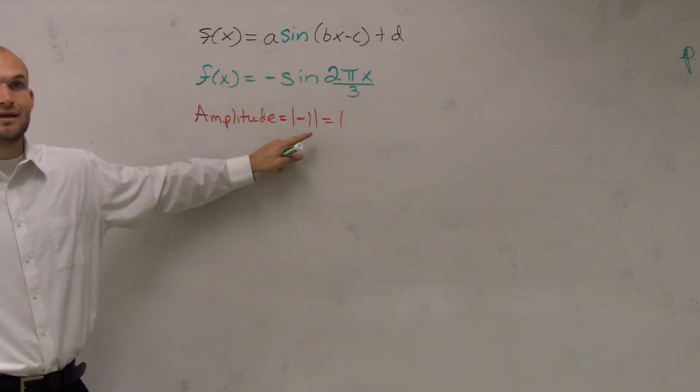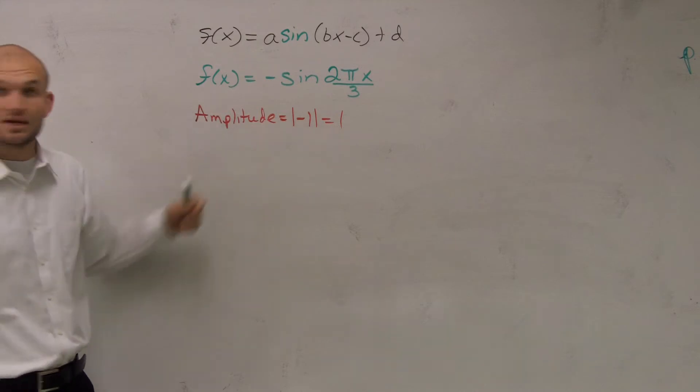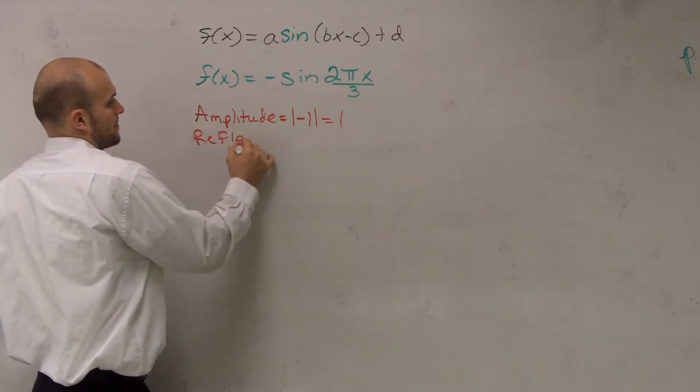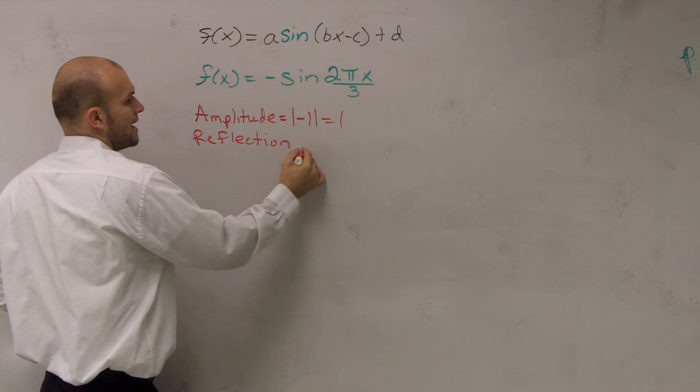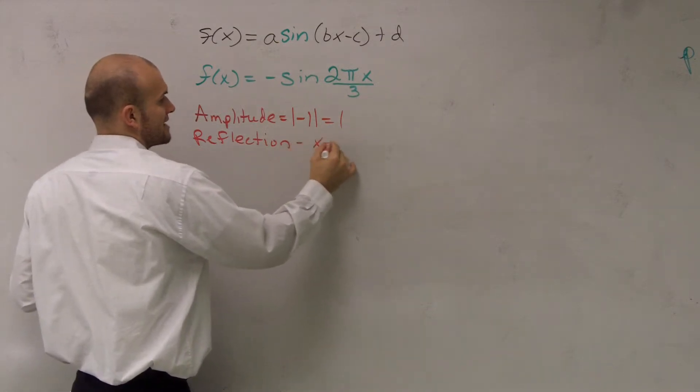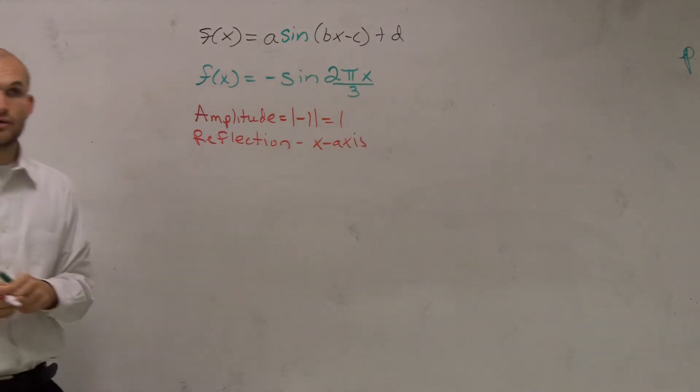So I can say the absolute value of negative 1 is equal to 1. Automatically, I notice since I took an absolute value of a negative number, I'm going to have a reflection. And that is going to be a reflection of the x-axis. So I need to make sure I take note of that.